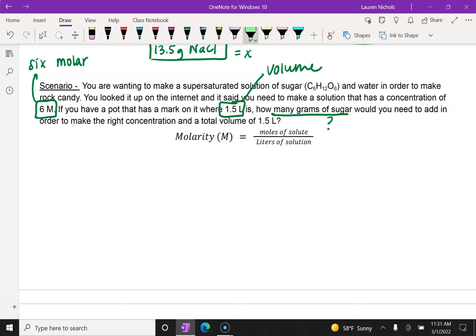So molarity, which is represented by a capital letter M, is equal to the moles of your solute divided by your liters of your solution. Now they want to know the grams of sugar, but remember moles can be changed to grams when we think about our molar mass. So if I need to find grams, that means I need to really find moles. So if we plug in what we have, we know, and oftentimes it's just abbreviated as M, is mol divided by L. So we know that our concentration is 6 molar. We don't know how many moles there are, and our volume is 1.5 liters.